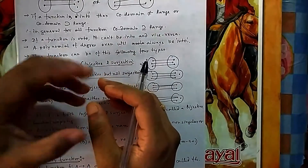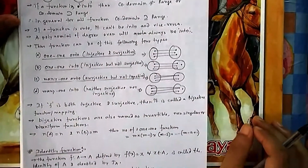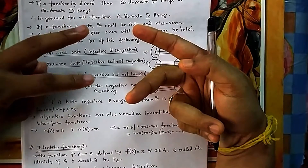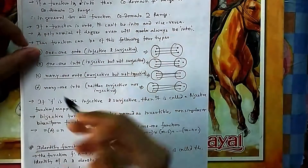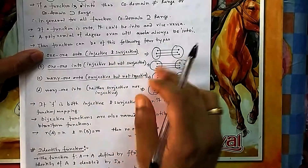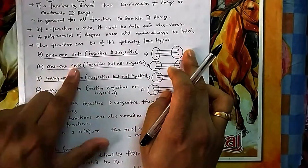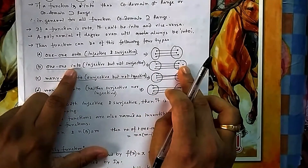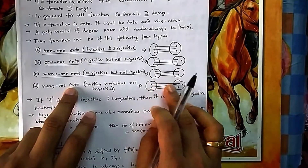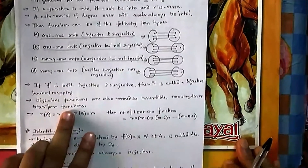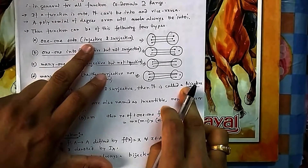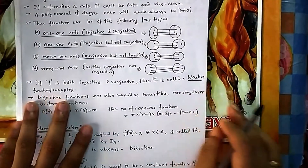Functions can be of four types by combining two classifications: one-one or many-one, and onto or into. One-one onto is injective and surjective (both). One-one into means one-one with some y's left alone. Many-one onto means no y is left alone. Many-one into means many-one with some y's left alone.